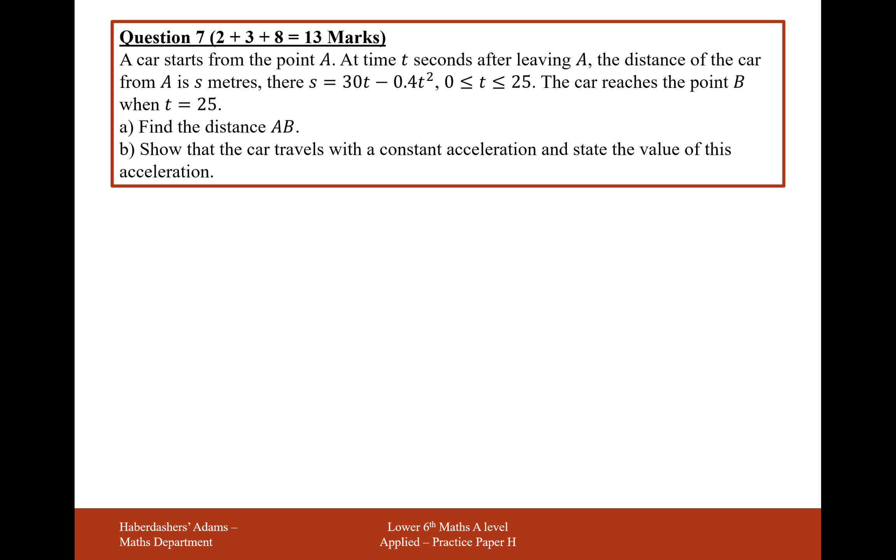A car starts from point A. At time t seconds after leaving A, the distance of the car from A is s metres, where s equals 30t minus 0.4t squared, where the time is from 0 to 25. The car reaches the point B when t is 25. Find the distance AB.